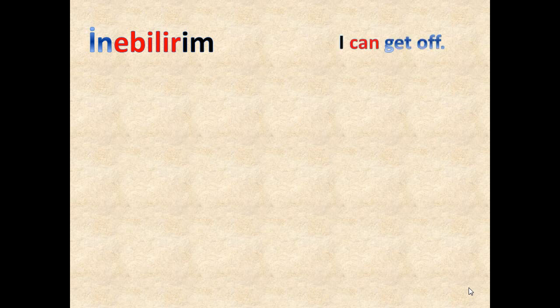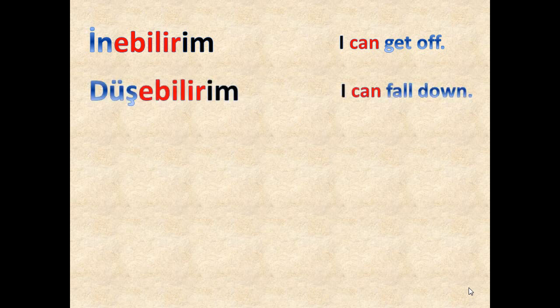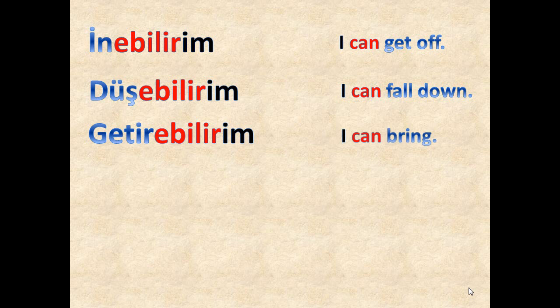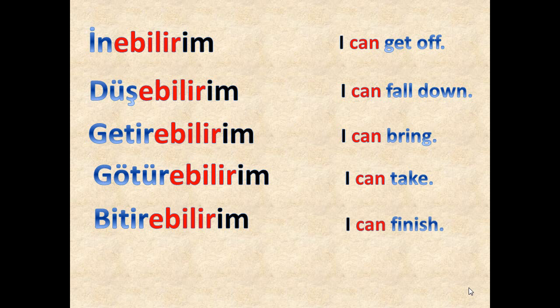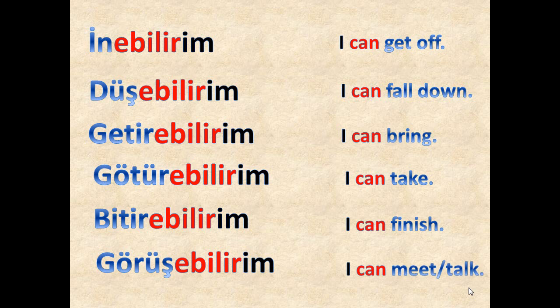'İnebilirim' means 'I can get off' — for example, get off the taxi or get off the car. 'Düşebilirim' means 'I can fall down' or 'I may fall down'. 'Getirebilirim' means 'I can bring' or 'I may bring'. 'Götürebilirim' means 'I can take' or 'I may take'. 'Bitirebilirim' means 'I can finish' or 'I may finish'. 'Görüşebilirim' means 'I can meet' or 'I can talk to someone'.